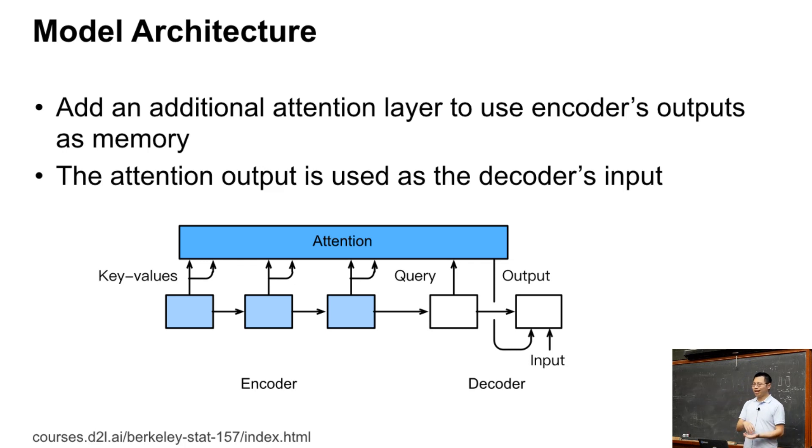If we are now decoding the last part of the sentence, the query output of this previous hidden state may be very similar to the encoder output of the last timestamp. So now the attention layer lets us pay attention to the timestamp for the encoder in the last part of the sentence.